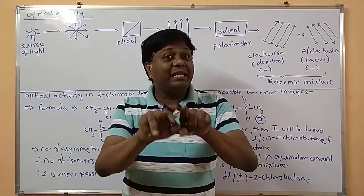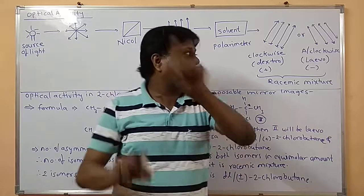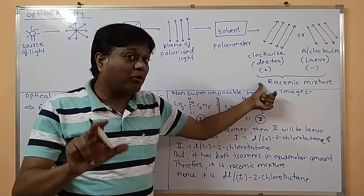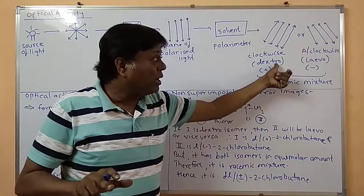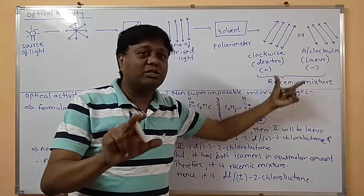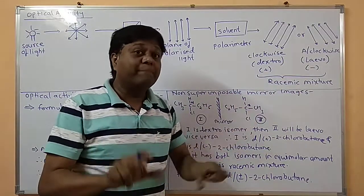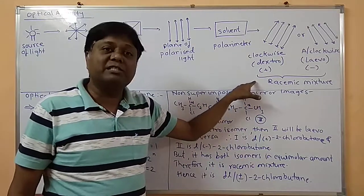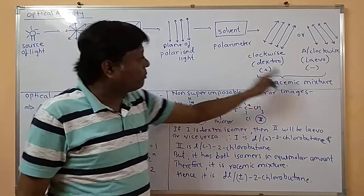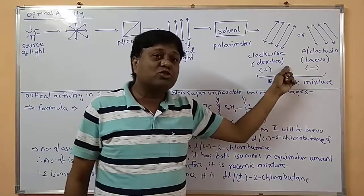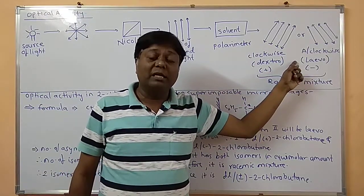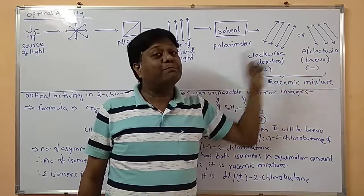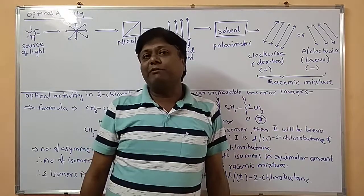If any compound shows both rotations with isomers present in equimolar amounts, that is called a racemic mixture — meaning the compound has both dextro and levo isomers present in equimolar amounts. This property of showing dextro or levo rotation is called optical activity.